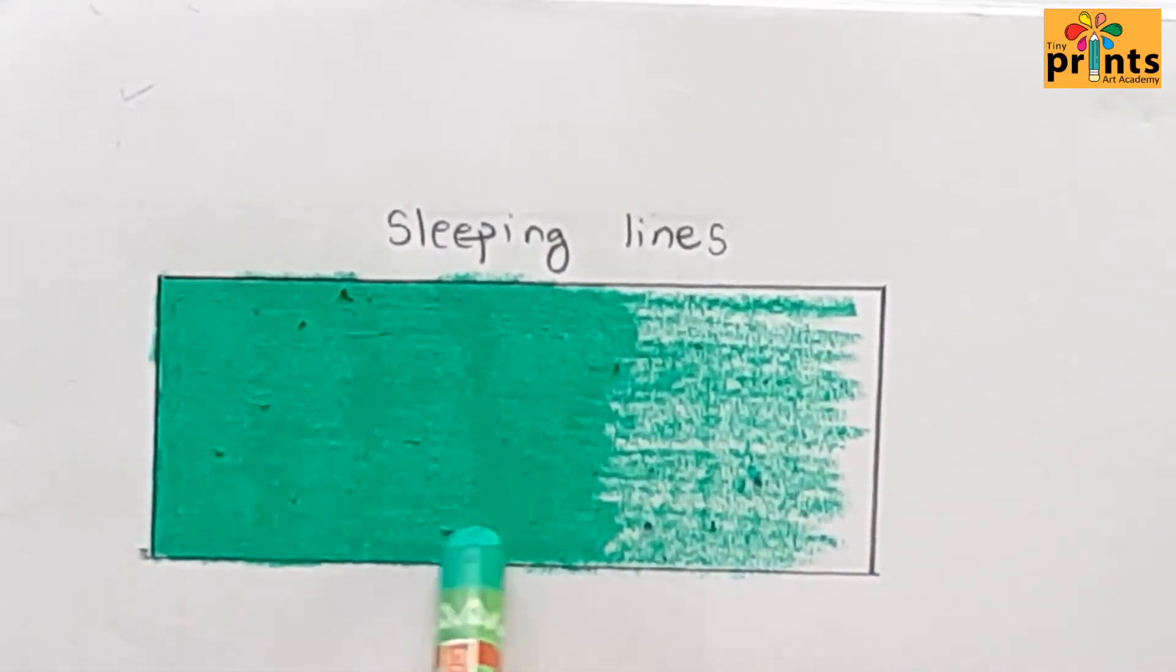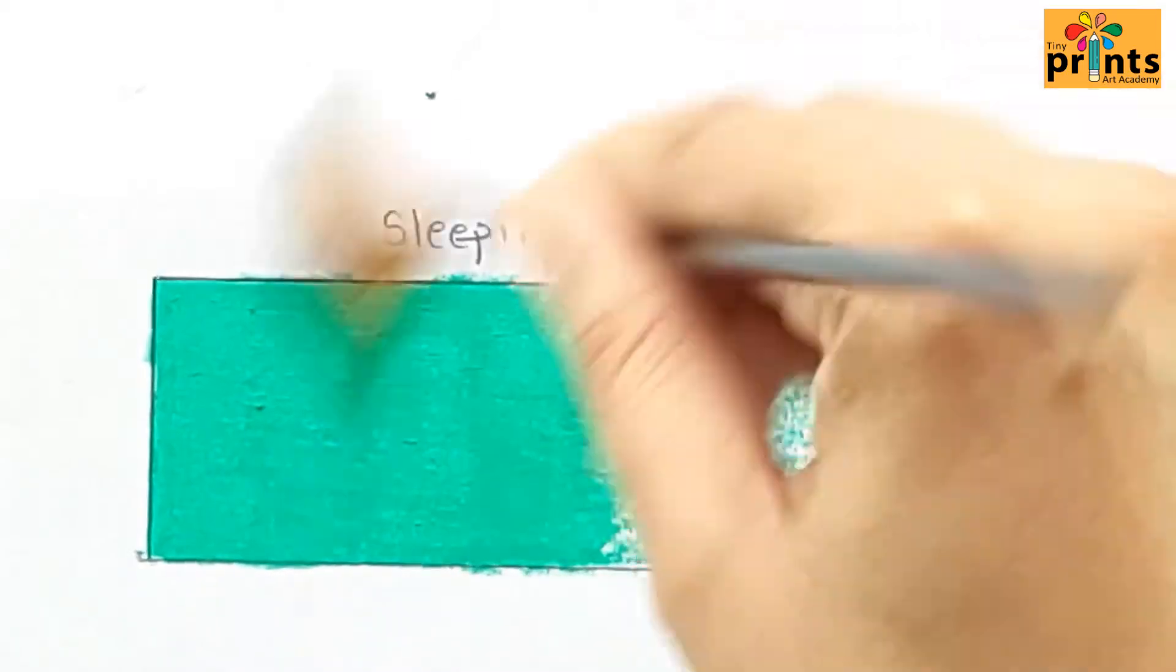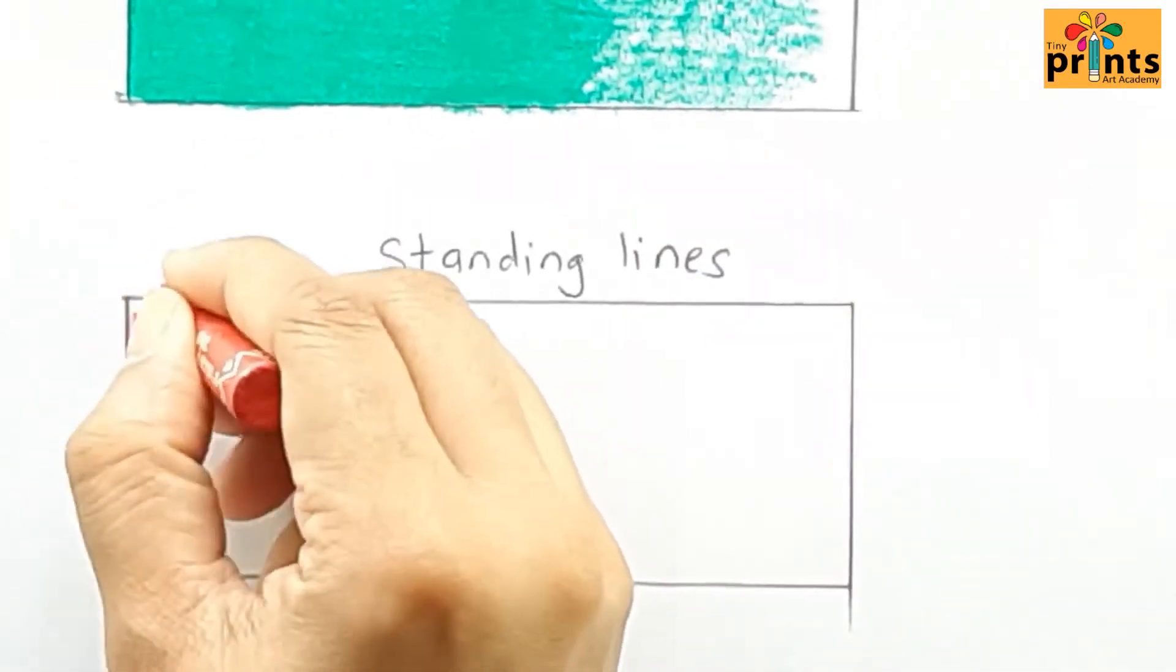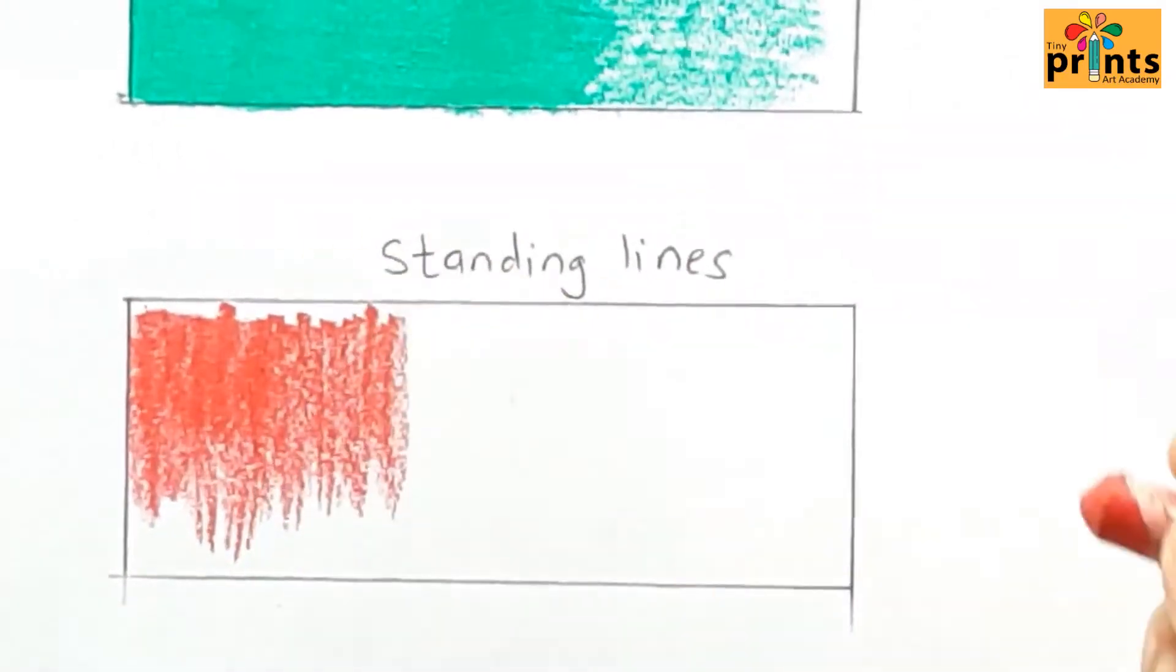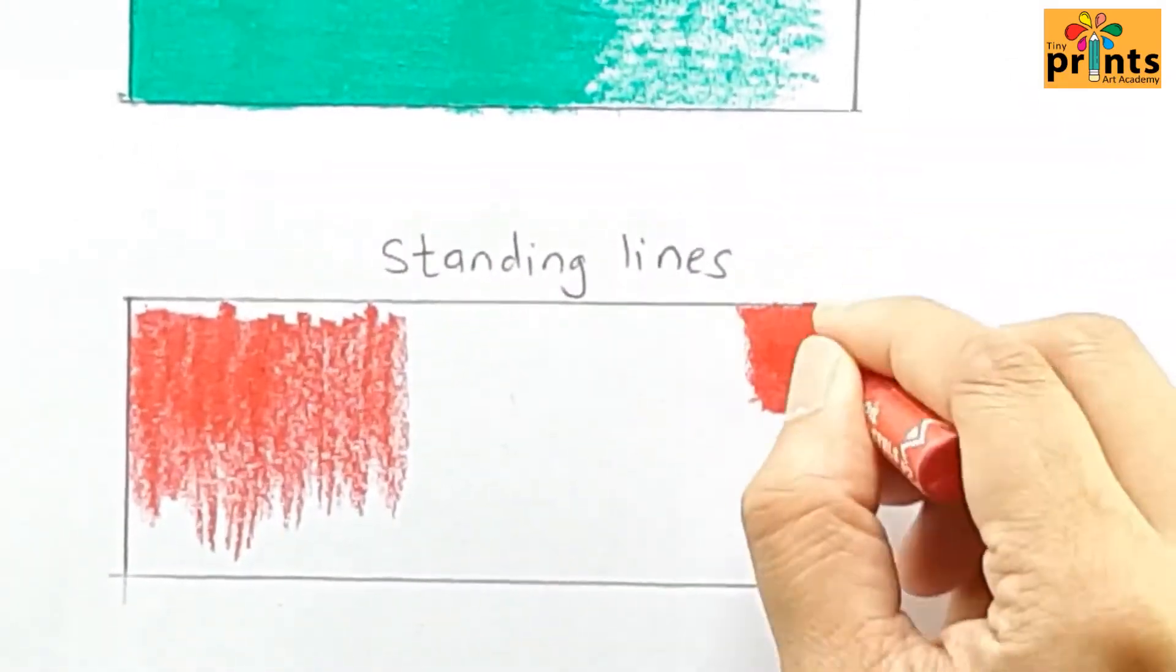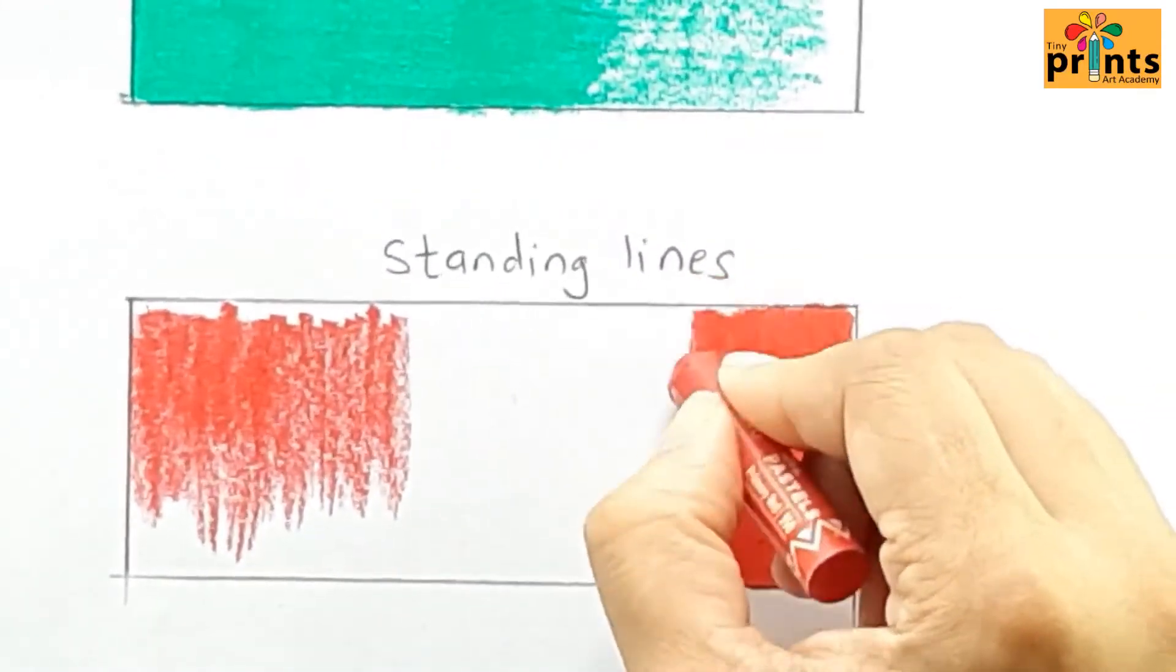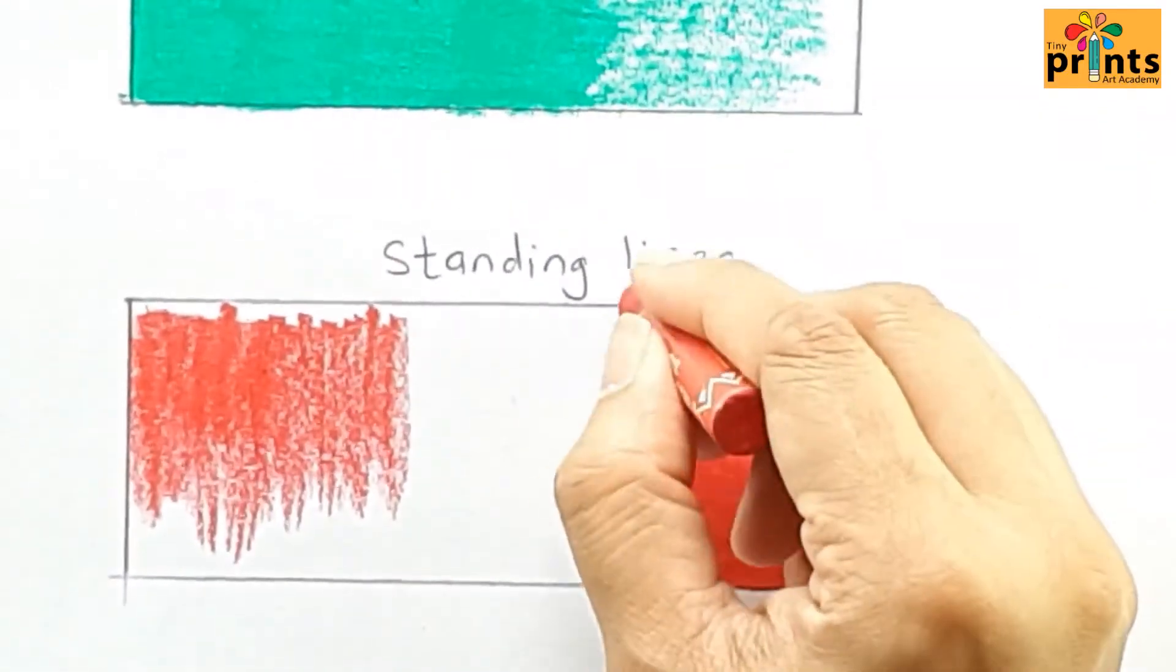So one will give you even coat and the other half will give you slightly with white spaces. Now standing stroke - the first section is with less pressure and another section you have to press your color down to get even tone. So all these strokes are really important.